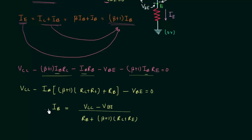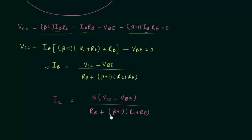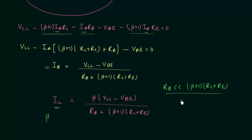This is the final expression for base current IB. The collector current IC equals β·(VCC − VBE) divided by [RB + (β + 1)·(RC + RE)]. An important condition: if RB is much smaller than (β + 1)·(RC + RE), then IC becomes independent of β. This is critical because if you change the transistor, β will change and shift the operating point — so this condition must be followed.